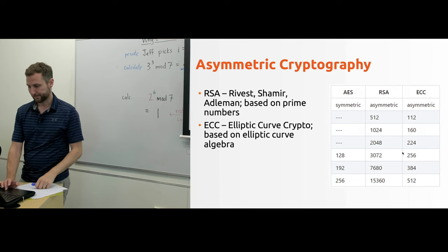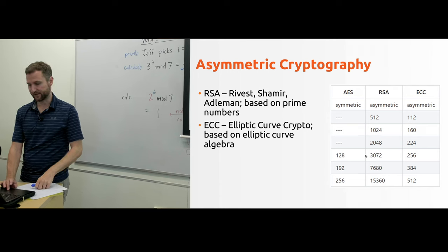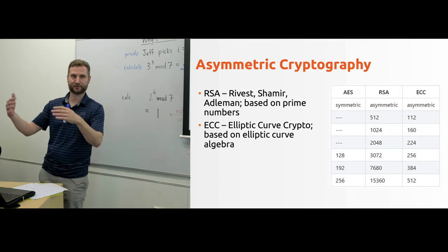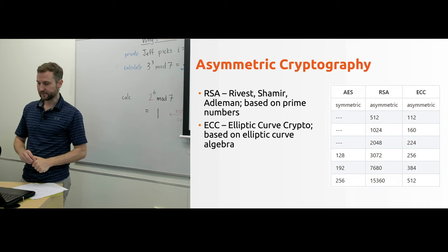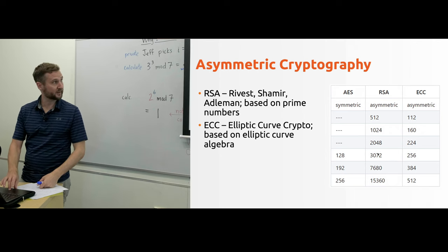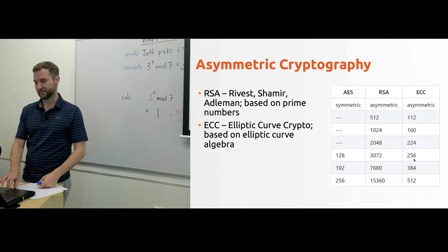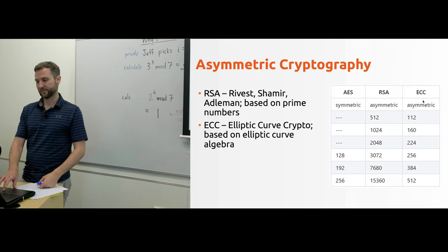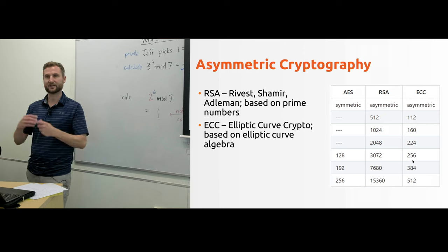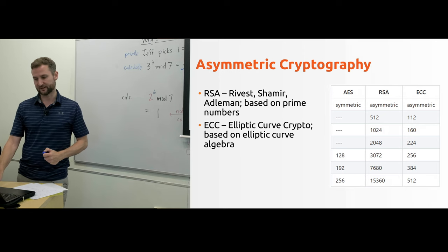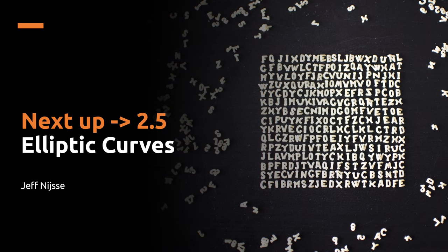We can see some of the security here. For approximately the same security, meaning how long does it take a modern computer to brute force the key, we can see that elliptic curve has a much smaller key size than RSA at 3,000. Even smaller is AES, but that is a symmetric system, so you have to do the key exchange. And so this is why more modern systems are using elliptic curve cryptography, because it's a bit more efficient in key size. It's not necessarily that the mathematics is any more or less secure.